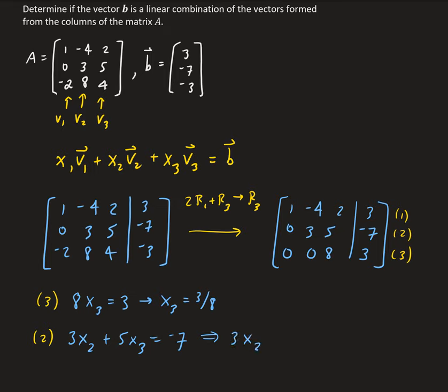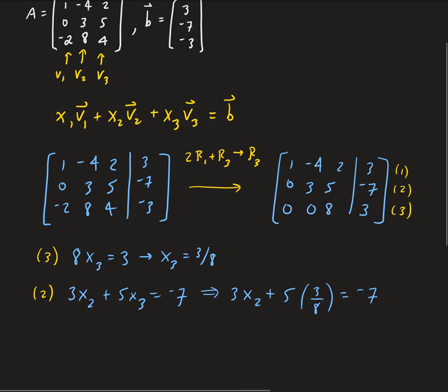From the second equation, we have 3 times x2 plus 5 times x3 equals minus 7. We know x3 is 3/8, so we substitute: 3 times x2 plus 5 times 3/8 equals minus 7. Solving for x2 gives us negative 71 over 24.